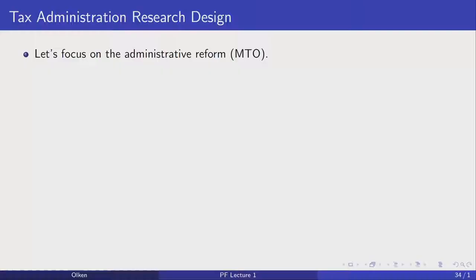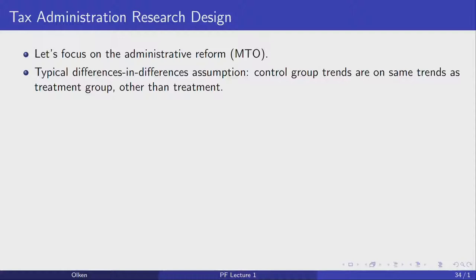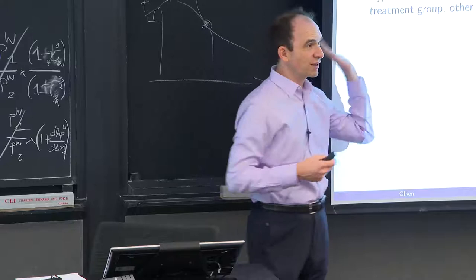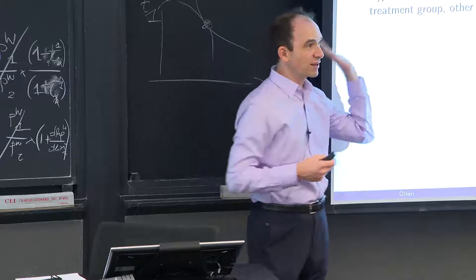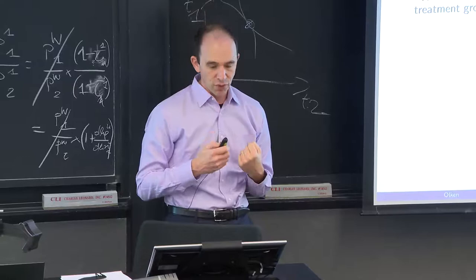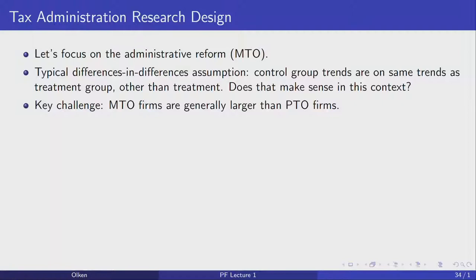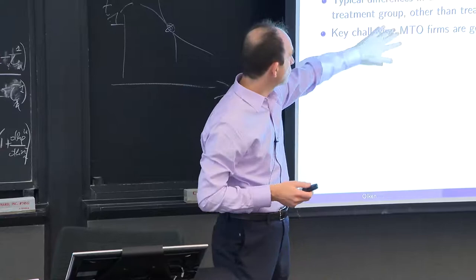The typical diff-in-diff assumption is that the control group is on the same trends as the treatment group. The identification here is that in each region they created a special office for large firms, moving the biggest firms into this special tax office. The problem is that the firms being moved in are large firms — they literally take the largest firms in each area.